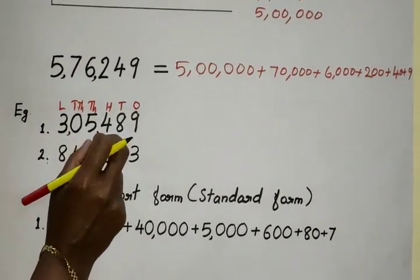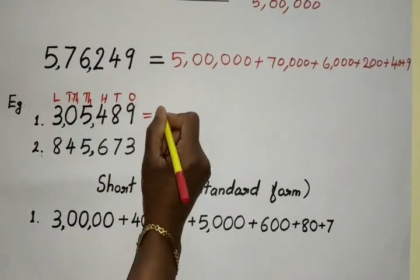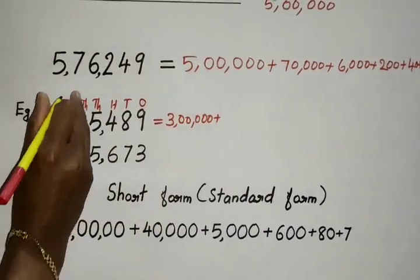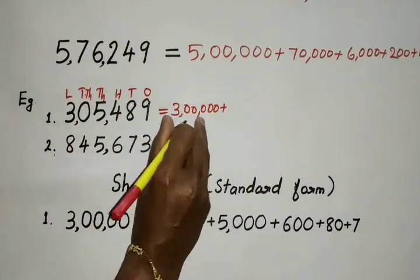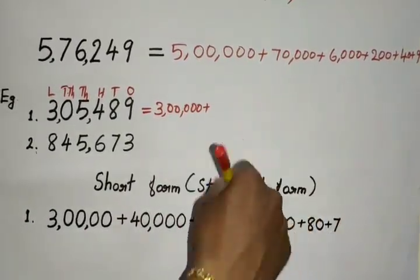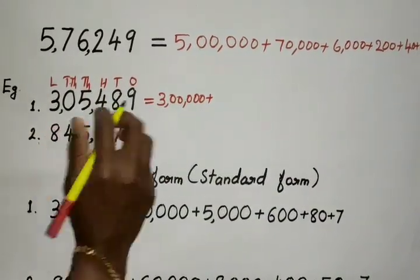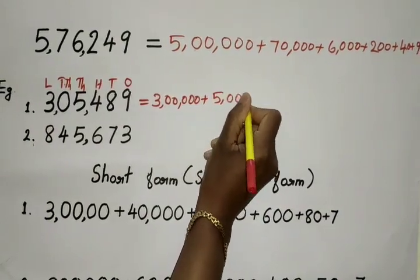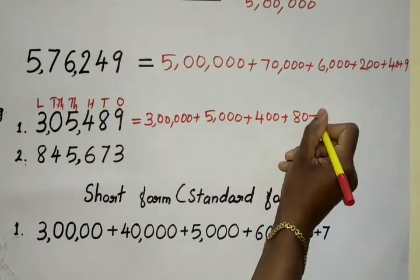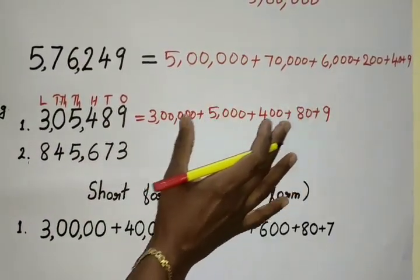Expanded notation means the sum of place values of each digit. The place value of 3 is 3,00,000. The place value of 0 is 0, so we do not write 0 in the expanded notation — we exclude 0. 5 is in the place of 1000, so 5,000, plus 400, plus 80, plus 9. If the place value is 0, there is no need to write that 0 in the expanded form.